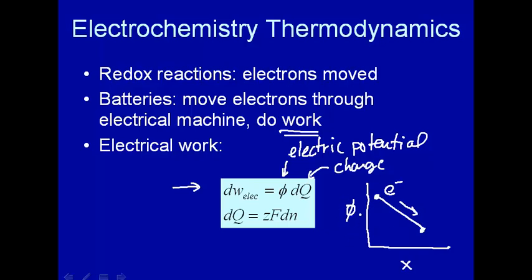This is an intensive variable. This corresponds to a potential, and the gradient and potential will lead to a flux of an extensive variable. In this case, it's electrons, or more generally, it's charge if you're a physicist. But we're chemists, and we're interested in electrons.